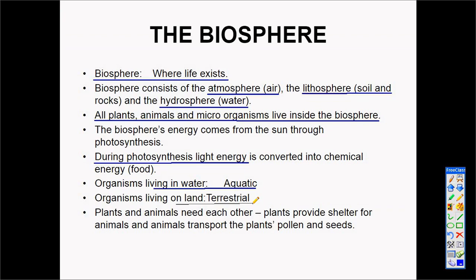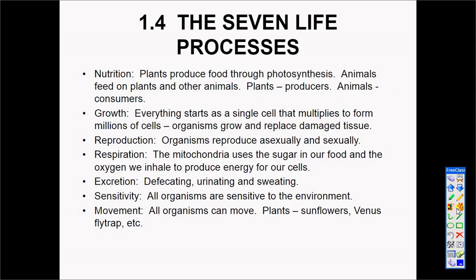Organisms that live in the water are called aquatic, and organisms that live on land are called terrestrial. Plants and animals need each other – they are dependent upon each other. Plants provide shelter for animals, but animals also spread the seeds and pollen of plants.